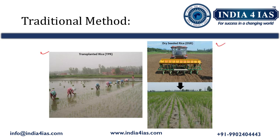Now we will do a comparative study of the traditional method of paddy cultivation and direct seeding of rice. In the traditional method, the seeds are sown in nurseries and grown for 25 to 35 days. Then the seedlings are uprooted and transplanted into the fields. This method is labor intensive and also water intensive.